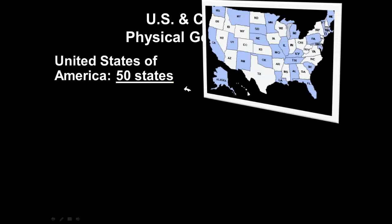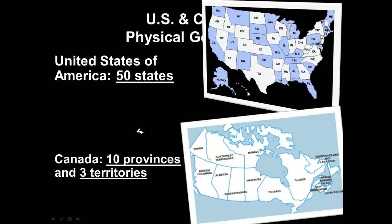First, we're talking about the United States of America — that is where we live, right here in Louisiana. The United States is made up of 50 states: the 48 contiguous states, meaning the states that touch one another, plus Alaska and Hawaii. The territory of Puerto Rico has recently filed a referendum where they want to go from being a territory to a state, so we might have 51 states soon.